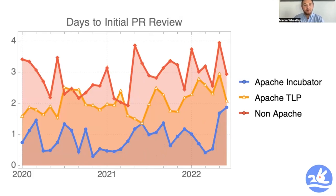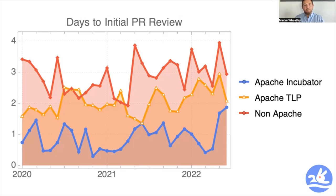We see more data in a similar theme: the days to initial review of a PR are fastest in the incubator projects. Overall, the Apache projects are beating the leading open source projects across the board — indicating that the Apache ecosystem is more responsive and faster-moving than many of these larger leading projects. Of course, a key thing to consider is that the non-Apache projects we chose are the largest, most popular projects — they have massive code bases, a lot of complications, more complex review processes, and may be run by committees or consortiums. Even with that in mind, the data tells a great story showing that the Apache ecosystem is doing very well compared to some of the best projects in the world.